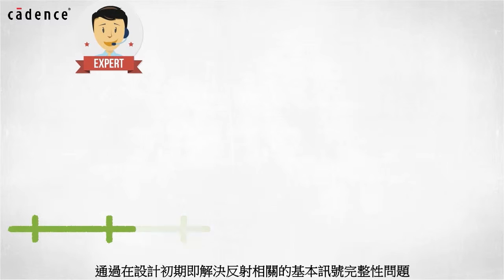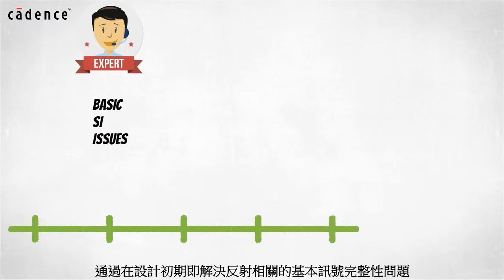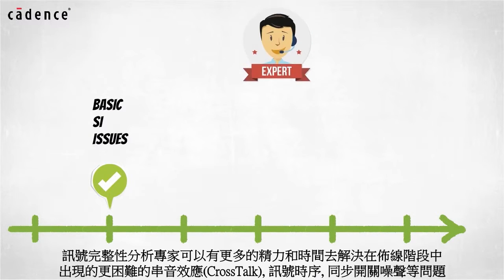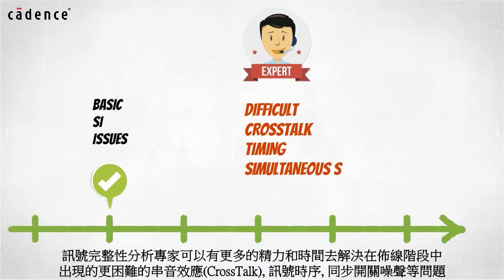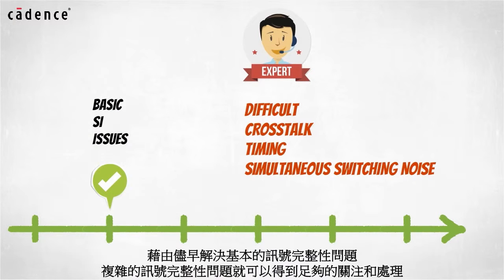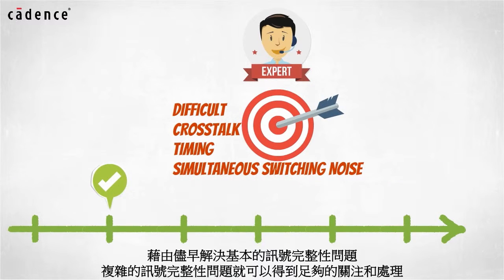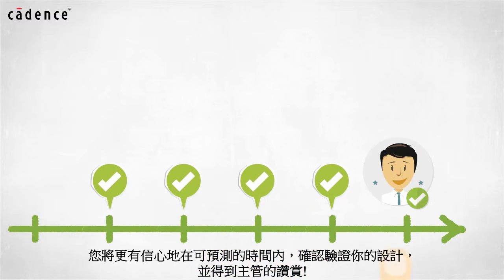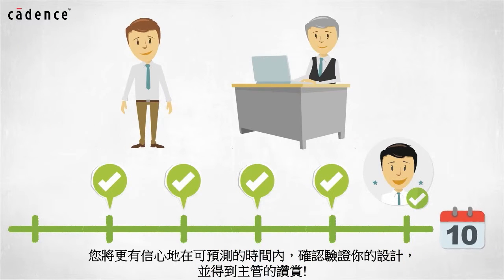By addressing basic reflection-related SI issues early in the design cycle, signal integrity experts are freed up to focus on the difficult crosstalk, timing, and simultaneous switching noise problems as PCB routing tasks progress. By taking this whole category of problems off the table up front, the more complex SI problems can be given proper focus and you can be more confident that you can sign off on your design on a predictable schedule — and that will keep your boss happy.